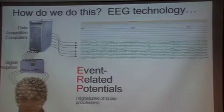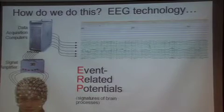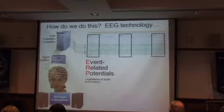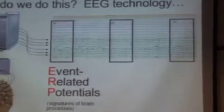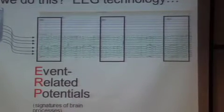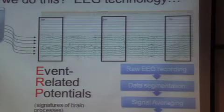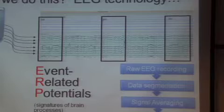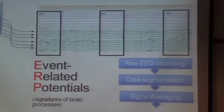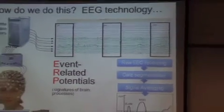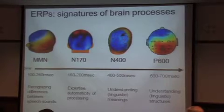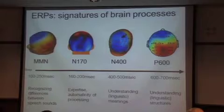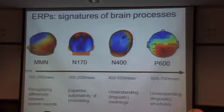After we've recorded some data, we have to do some more things to it to get some information out. What we do is we chop up our data and look at the brain's responses to those particular events. Once we have those segments of data, we can average those segments together, and that's when we get what we call an event-related potential.